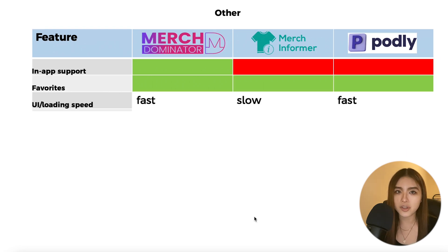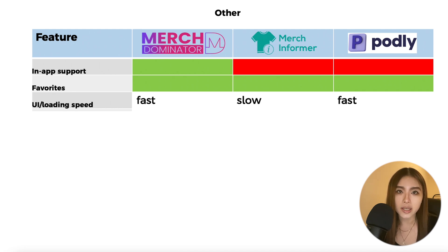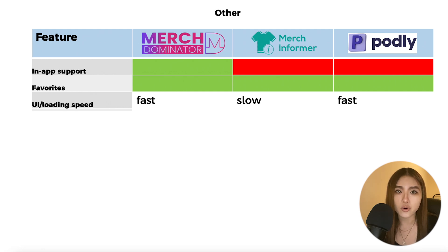Other notable features include favorites, where you can save designs you're interested in, and an in-app customer support chat bubble which only Merch Dominator currently has. In terms of loading speed, Merch Dominator and Podly are both reasonable, while Merch Informer is a little on the slow side, at least when tested.